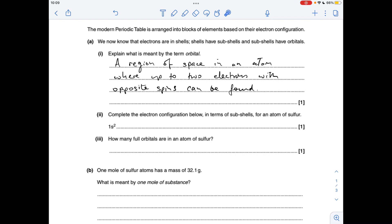Okay, so definition of orbital is a region of space in an atom where up to two electrons with opposite spins can be found.